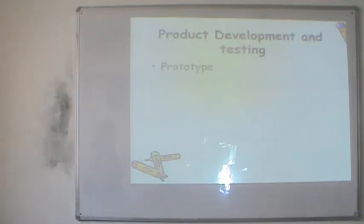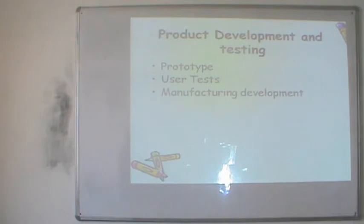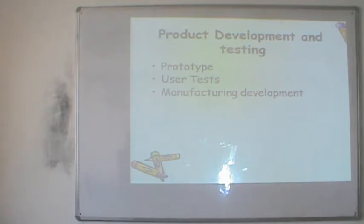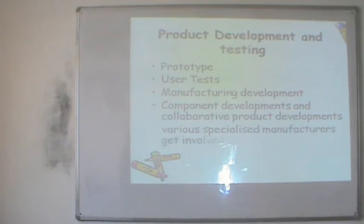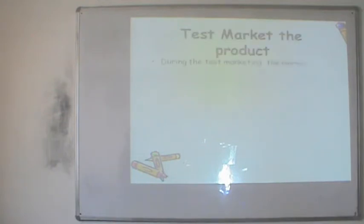Step six is product development testing. For the first time, the product enters the engineering department where a prototype is developed — a miniature or first rollout version of what the product would look like. This is then tested with users: a small sample is asked to taste a chocolate sample, apply a fairness cream, ride a particular bike, or evaluate it in some other way. Manufacturing development happens here: decisions are made about whether to make or buy components.